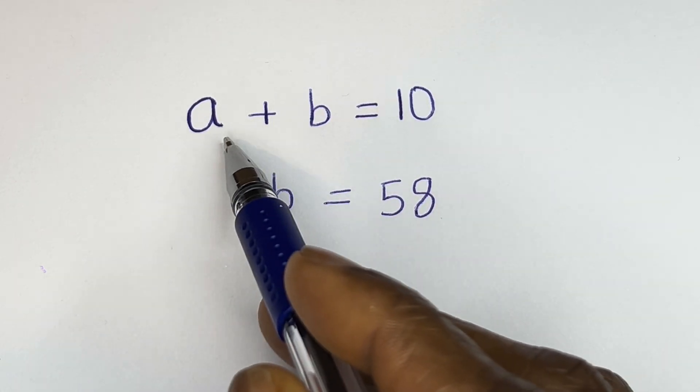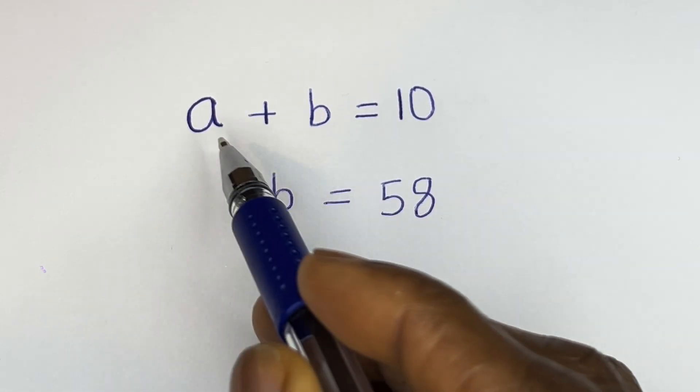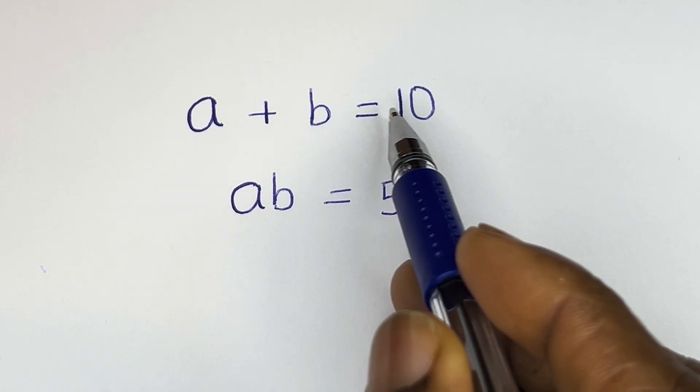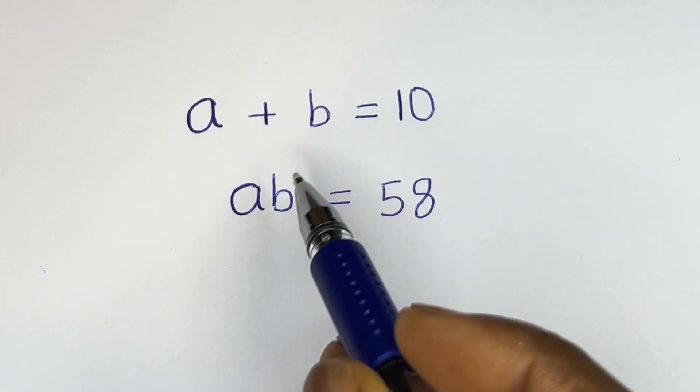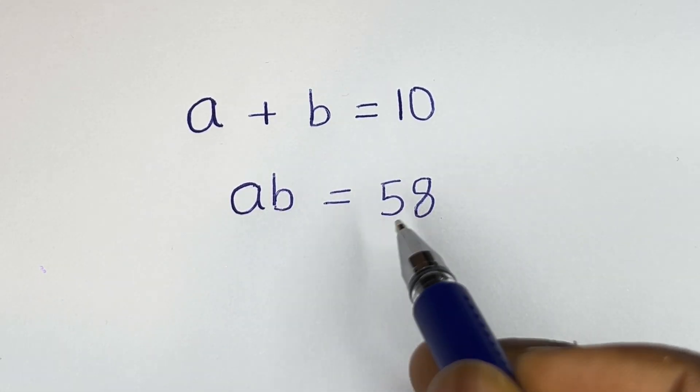Hello. How to solve for a and b in this equation: a plus b is equal to 10, and a times b is equal to 58.